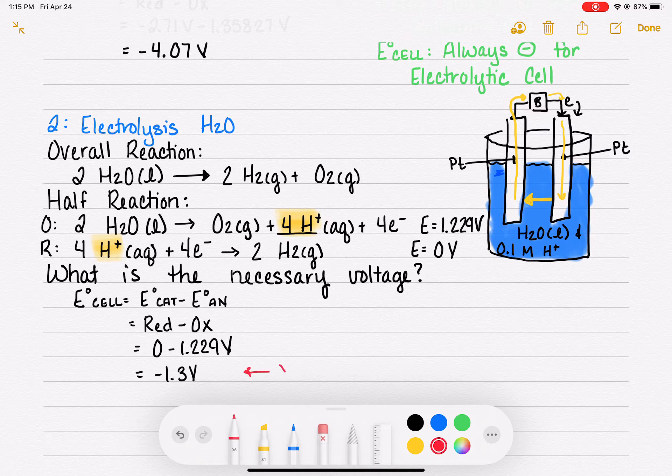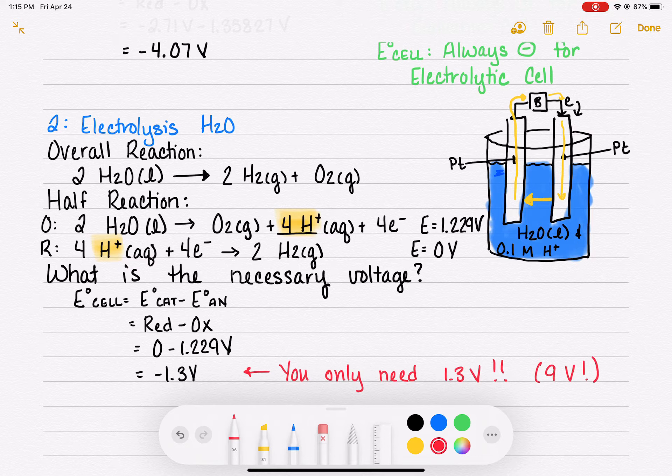This means in English that you only need 1.3 volts to make this reaction work. You could use a nine volt battery to make this reaction work and in fact I've done it with lots of middle schoolers.